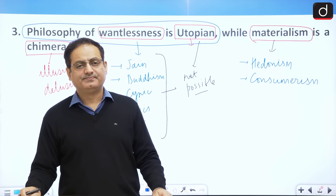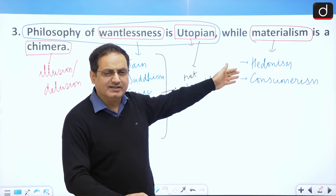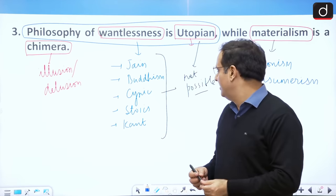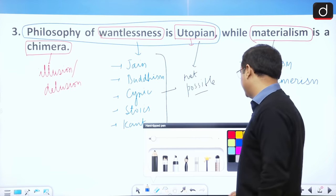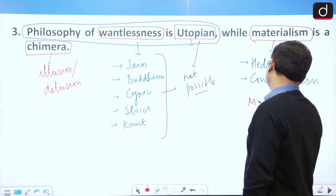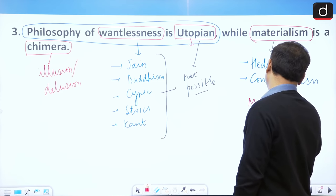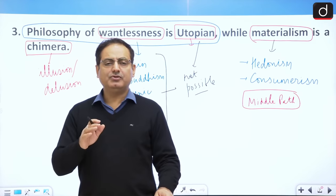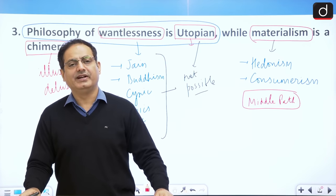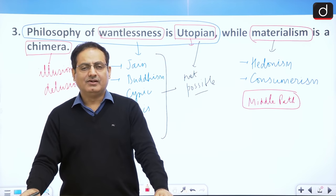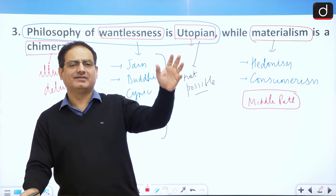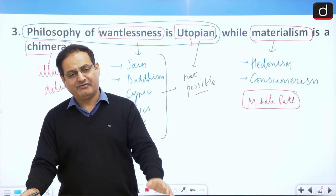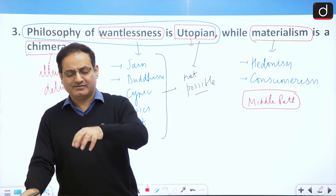The ultimate conclusion is: if wantlessness is utopia and materialism is a chimera, what is the solution? The solution is the middle path — and many thinkers in India and the west have talked about this. Mahatma Buddha in his ultimate analysis advocated the middle path, though for Buddha the middle path was between nihilism and eternalism.